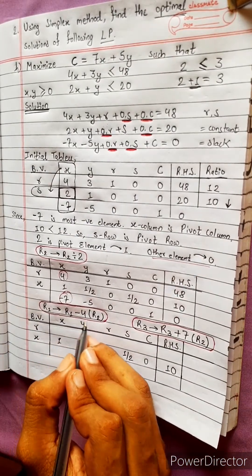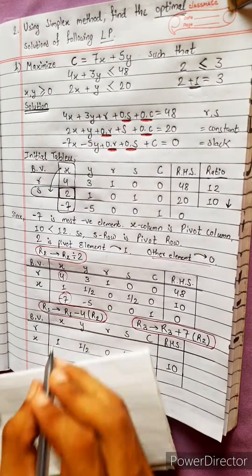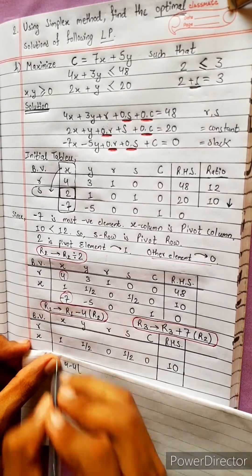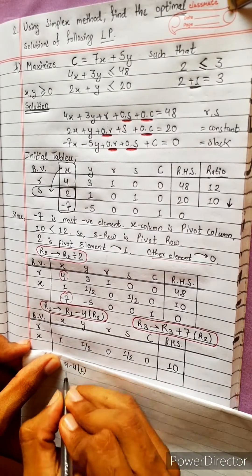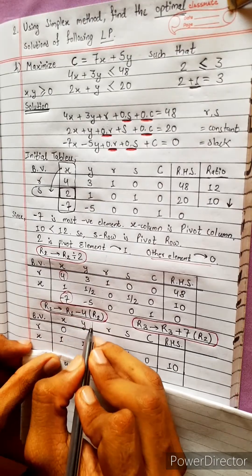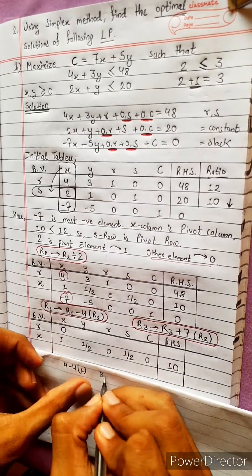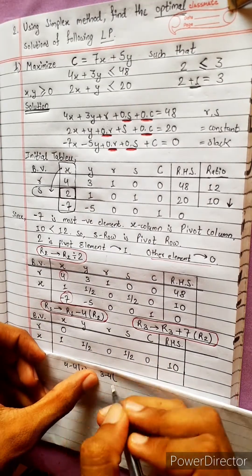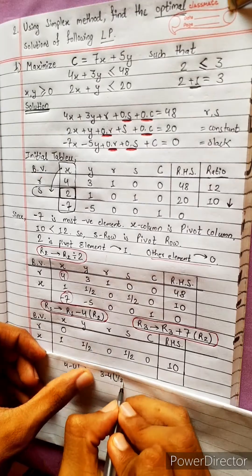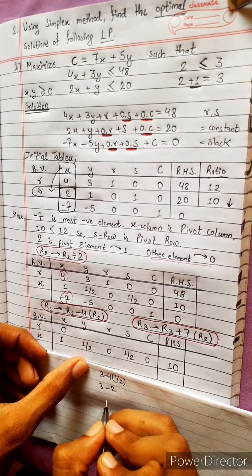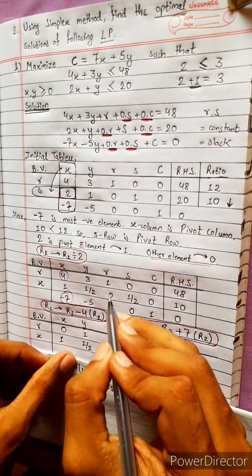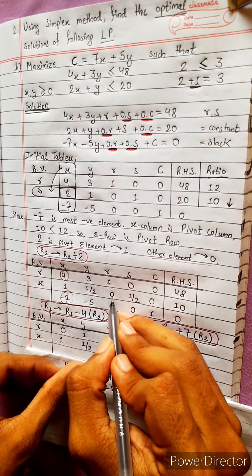R1 minus 4 times R2: 4 minus 4 equals 0. R1 gives 3 minus 4 times R2, which is 1 by 2. We need to look at 3 minus 2, which is 3 minus 2.